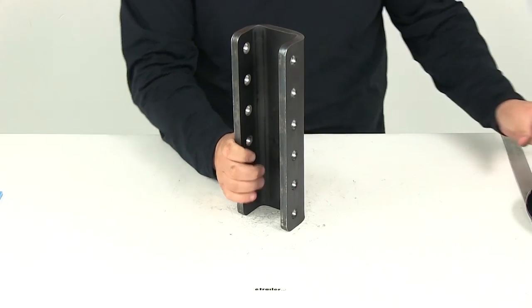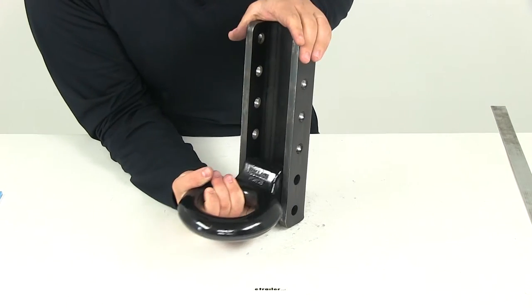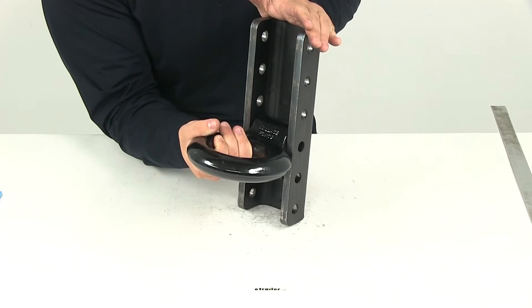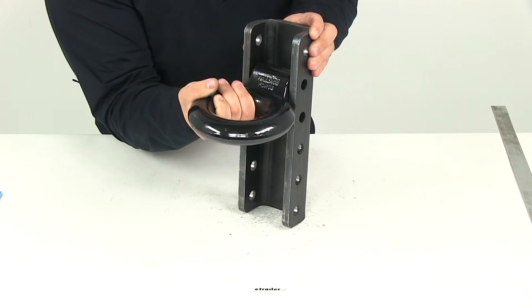Now I do have a lunette ring here today just to show how it would fit inside our channel bracket. So once you have it in there, you can adjust it to whatever height you need, and then you need to install your hardware.